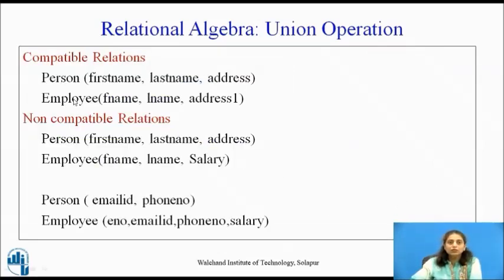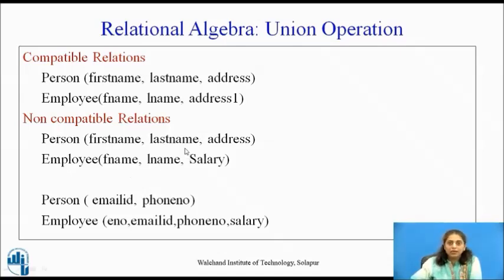Here are some more examples of compatible and incompatible relations. Person and Employee are compatible because the number of attributes is the same and the domains of respective attributes match. Two other relations are not compatible because, although first-name/fname and last-name/lname domains match, the domains of address and salary differ. A third pair is not compatible because the number of attributes itself is different.